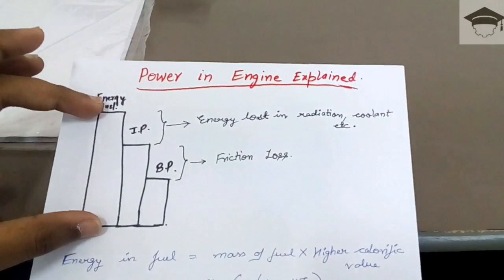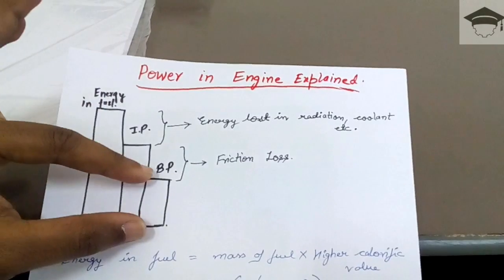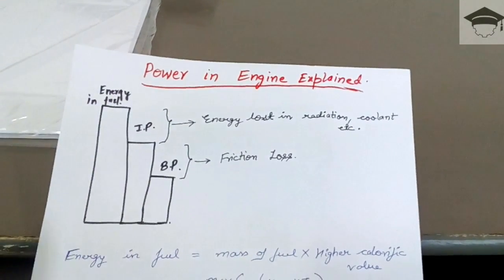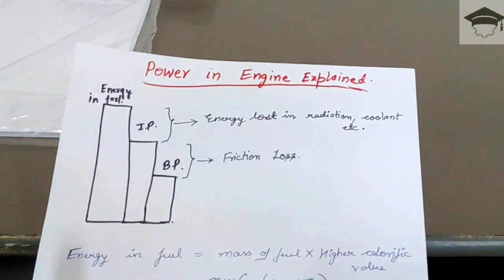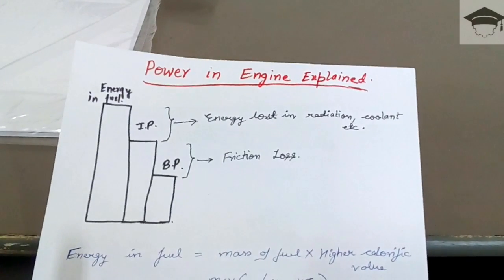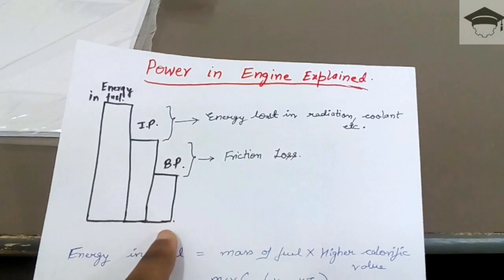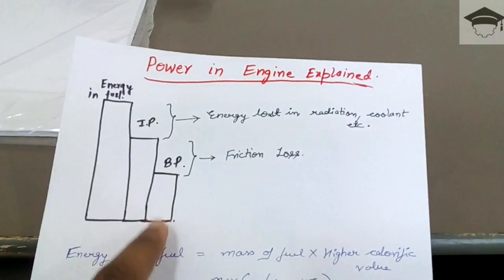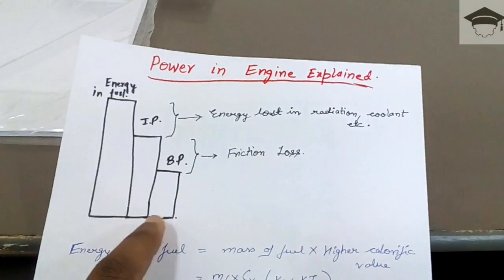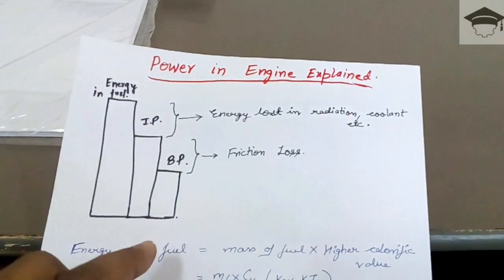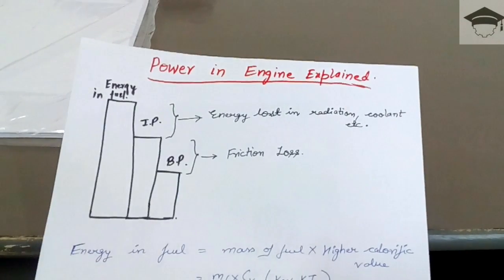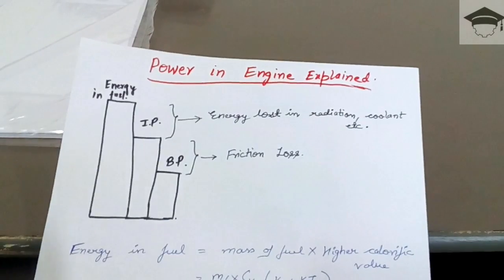In SI engines, only 30% of the total energy is available at the shaft — that is, the brake power is 30% of the energy in the fuel. In the case of CI engines, it is 35 to 40% of the energy in the fuel.